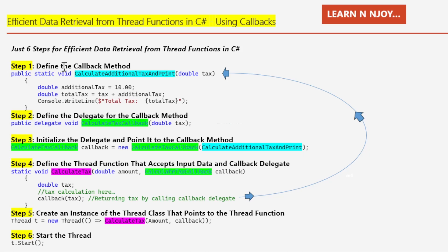Step 1: Define the callback method. We begin by defining the callback method that will handle the data returned from the thread. I've created a callback method named 'CalculateAdditionalTaxAndPrint' that accepts an input parameter 'tax' of double data type. In this method, I apply an additional tax of 10.0, derive the total tax, and print it to the console window.